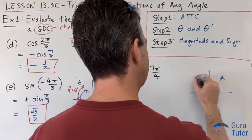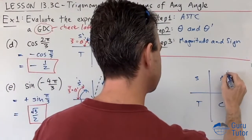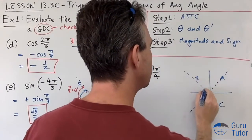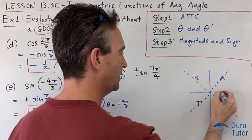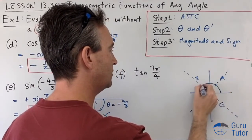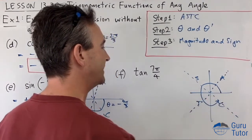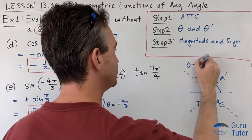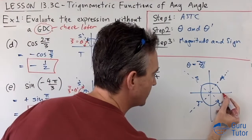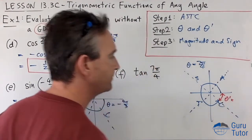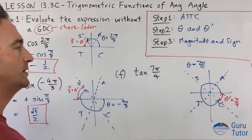Last one: tan(7π/4). ASTC. We're doing lots of π/4, which is a 45° angle interval, so let's cut each quadrant in half to get 45° angles. Positive direction: π/4, 2π/4, 3π/4, 4π/4, 5π/4, 6π/4, 7π/4 — we are in the fourth quadrant. θ equals 7π/4. Our acute reference angle is always to the horizontal, and going in intervals of π/4, that's going to be 45°.